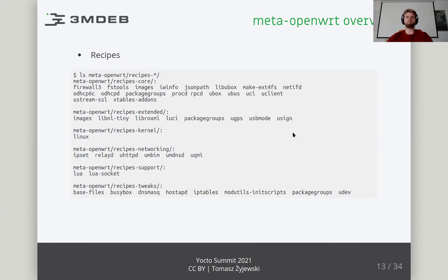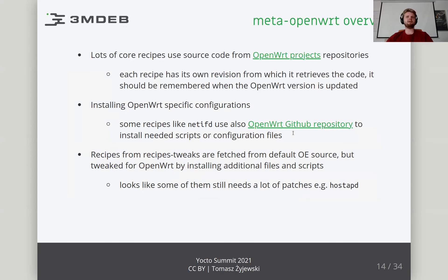The Meta OpenWrt layer provides recipes divided into Core, Extended, Networking, Support, and Utils groups. These recipes deliver packages intended for the OpenWrt system — metadata related to LuCI or ProCD, closely related to OpenWrt, as well as more common ones such as HostAPD or Dnsmasq. The Linux bbappend file sets ipset and bridge configuration as modules into the Linux kernel. Packages closely related to OpenWrt, such as LuCI, netifd, or iwinfo, download source code from the official project servers, each with its own version and a possible set of patches found in repositories on GitHub.